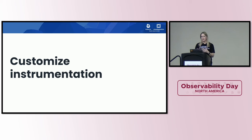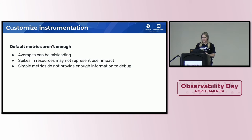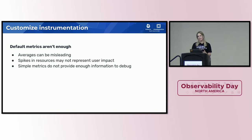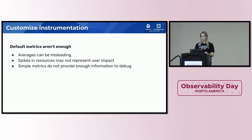This is where we get into customizing instrumentation. We want to have as much data as possible so we can better understand what's going on in times when we don't know what's happening. For a lot of tools, there may be dashboards and standard alerting thresholds out of the box, but those default metrics may not be enough. Averages can be misleading, and spikes in resources may not always represent user impact — a batch service spiking CPU in the background affects no one.